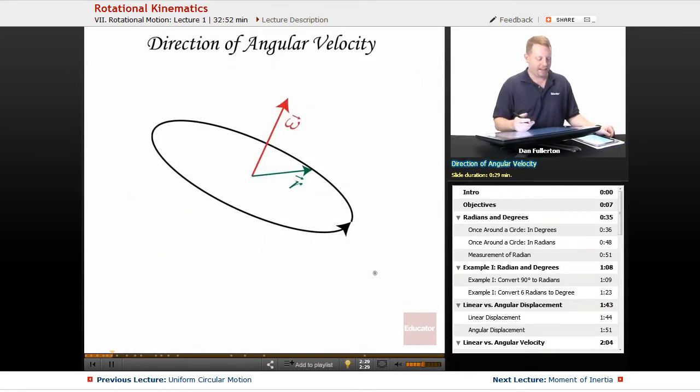And when we talk about these angular vectors, the direction is given by the right hand rule. Something that's very non-intuitive. So, if we think about an object going around a path like this, the radius to the side, take your right hand, wrap the fingers of your right hand in the direction the object is moving around that circular path, and your thumb will give you the direction of the positive angular velocity vector. So, the angular velocity vector does not point in the direction the object is actually moving.